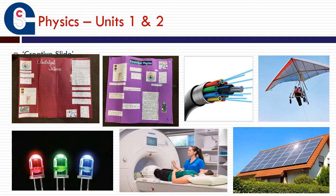Here we have pictures of the scientific posters students have created for their Outcome 3, and other photos representing physics — cables representing electricity, a hang glider representing motion, LED lights, an MRI machine, and solar panels.